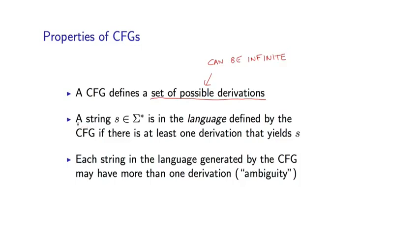So a couple more definitions, or one more definition. So we say a string S, so a sentence, so this could, for example, be the dog laughs, we say a string S is in the language defined by the CFG if there is at least one derivation that yields S. So a CFG defines a language. A language is a set of strings, and a string is in the language if there's at least one parse tree for the string.